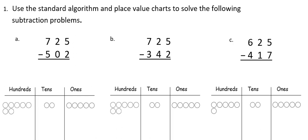The first problem is 725 minus 502. I have the number 725 shown in the place value chart with disks in the hundreds place, the tens place, and the ones place. I need to subtract 502. Starting by subtracting my two ones, I'll cross off two of the ones, leaving three ones. In my tens place, I have two minus zero, so I still have two tens. In the hundreds place, seven minus five means I cross off five disks, leaving two hundreds. So 725 minus 502 equals 223.